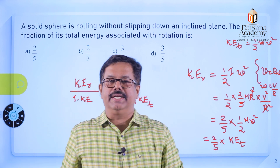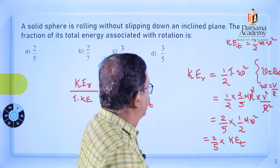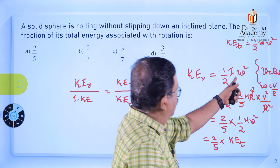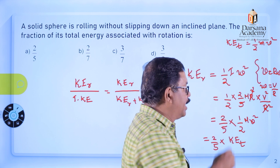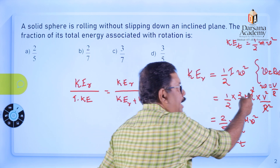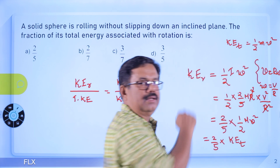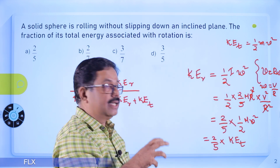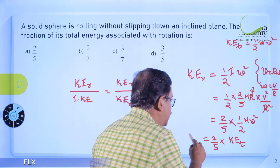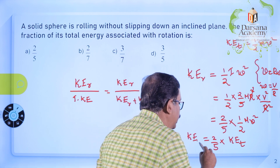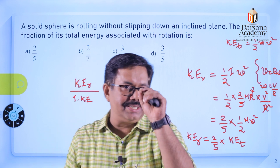Now look at this — the moment of inertia of the solid sphere is (2/5) MR². What is the coefficient of MR² in that expression? It is 2/5. This is the key to the shortcut: the coefficient of MR² in the moment of inertia formula directly gives us the multiplier for KET to get KER.